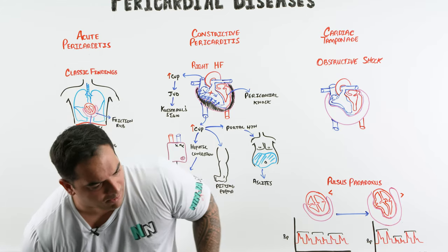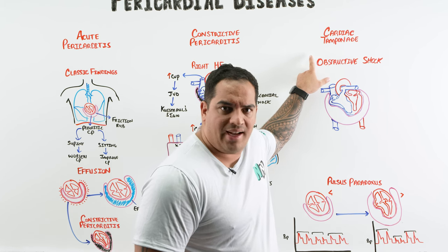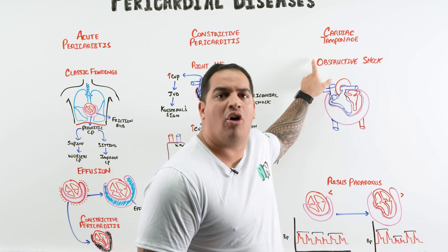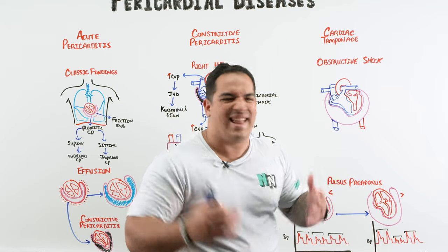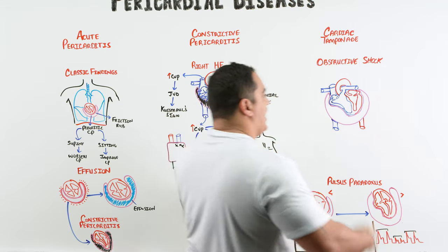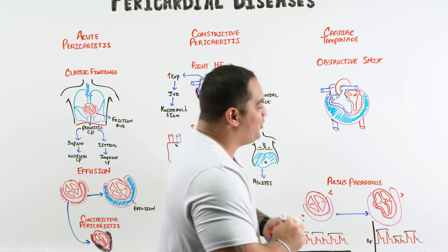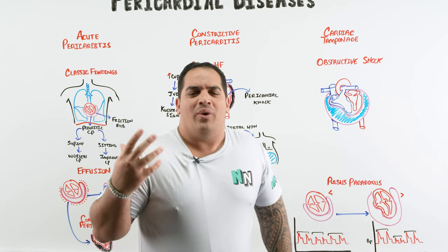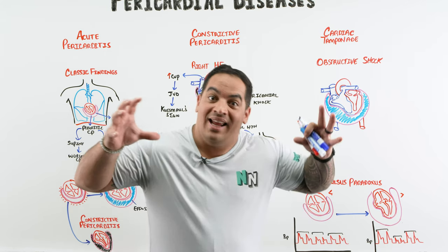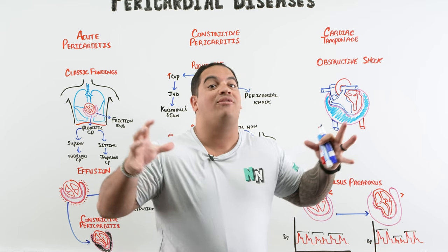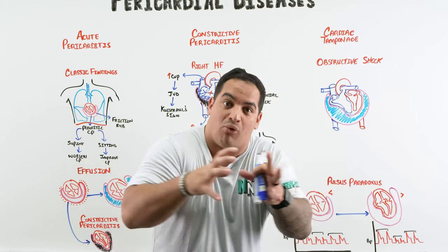Cardiac tamponade — the scary one. It can form from hemopericardium (proximal aortic dissection, free wall rupture, trauma, cardiac surgery) or a progressively enlarging pericardial effusion from pericarditis, viral infections, post-MI, or uremia. The confounding factor: it's not about the volume of fluid — it's about whether it compresses the right heart. A small amount of rapid blood can cause tamponade; a large slow effusion may not, until the stretch limit is reached.